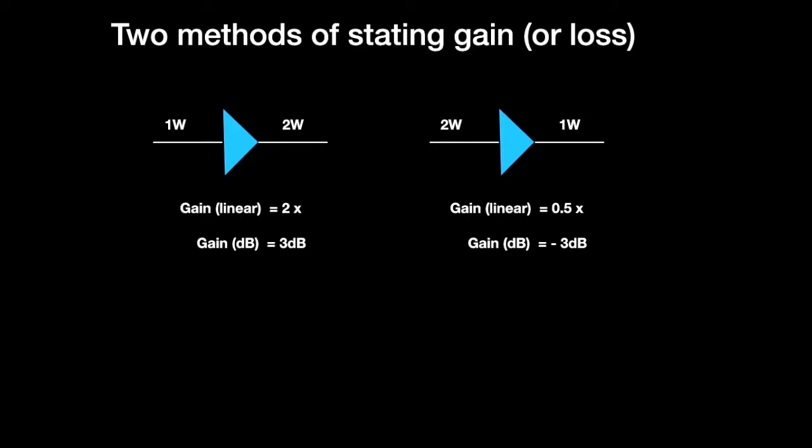If we had a loss through the amplifier, perhaps it was an attenuator rather than an amplifier. If we had 2 Watt in and 1 Watt out, then the gain of that device would be, in linear terms, a half. We could say it's got a loss of 2 times, or a gain of a half. The gain is the output over the input, which is 1 Watt over 2 Watt, which is a half. If we work that out in dBs, we have minus 3 dBs.